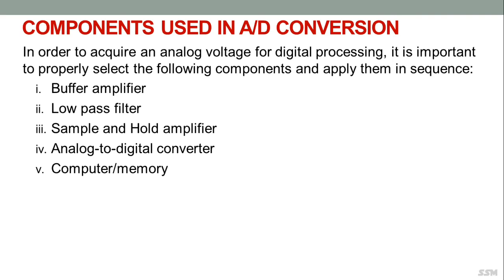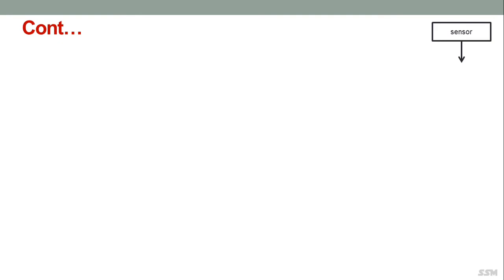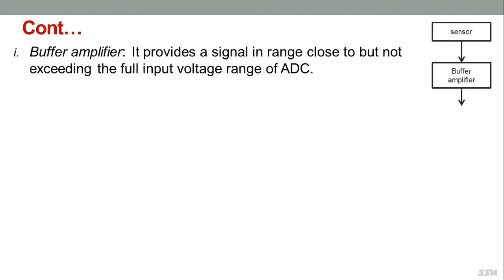To acquire an analog voltage for digital processing, the following components must be properly selected and applied in sequence: buffer amplifier, low pass filter, sample and hold amplifier, analog to digital converter, and computer or memory. Signals received from sensors are fed to a buffer amplifier, which provides a signal in a range close to but not exceeding the full input voltage range of the ADC.